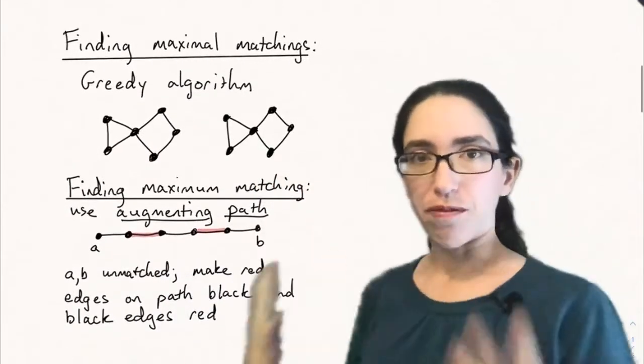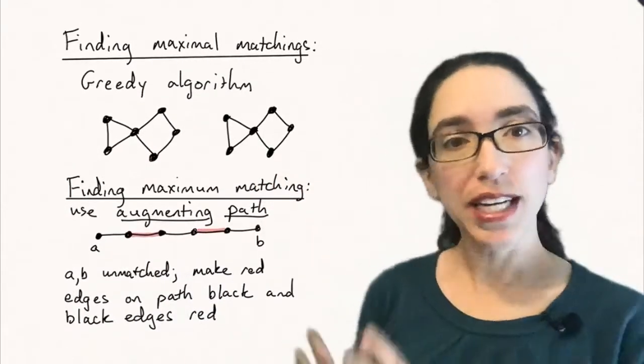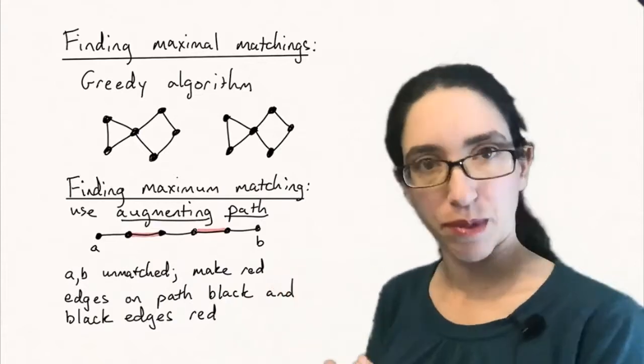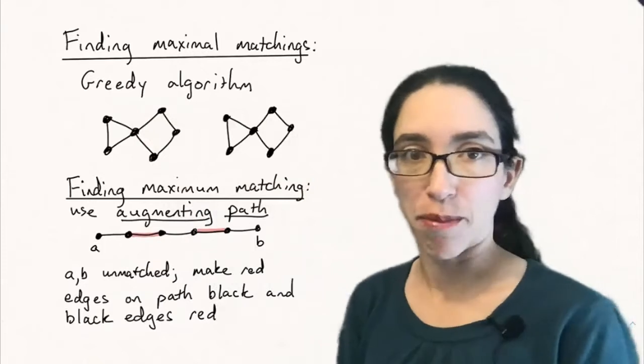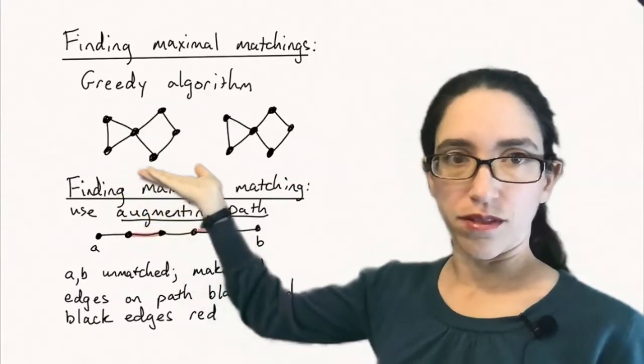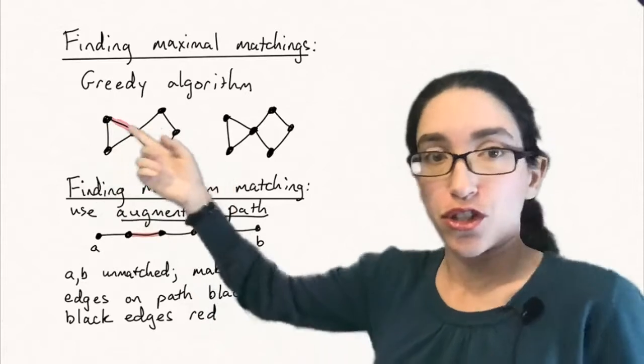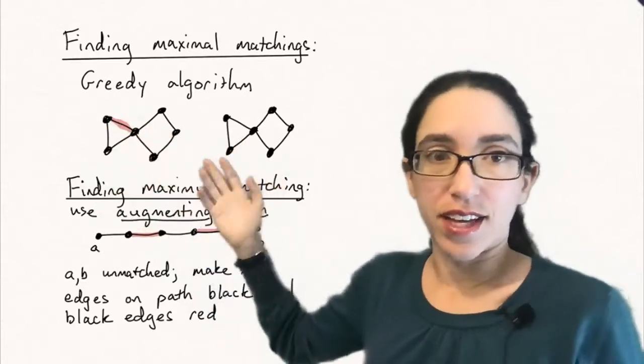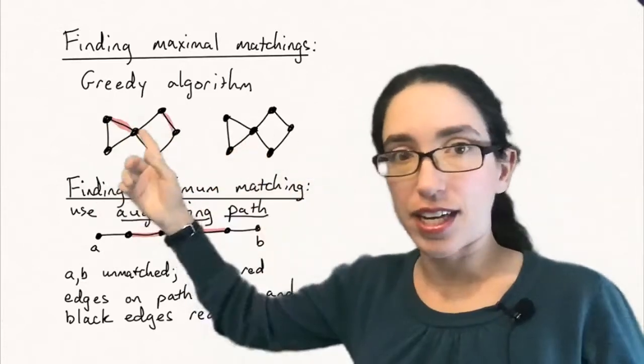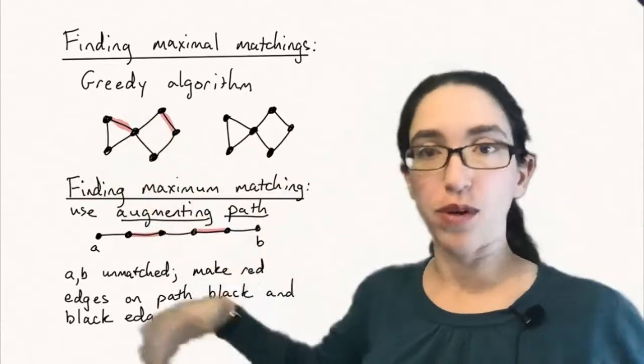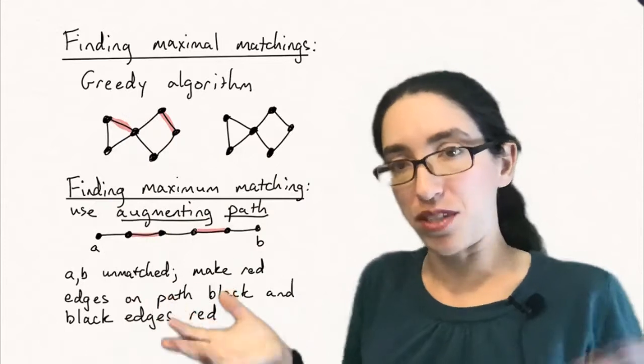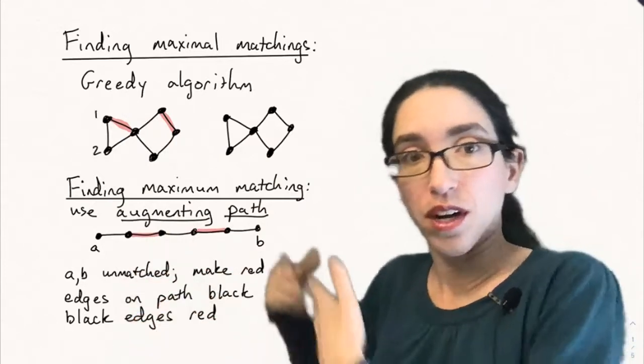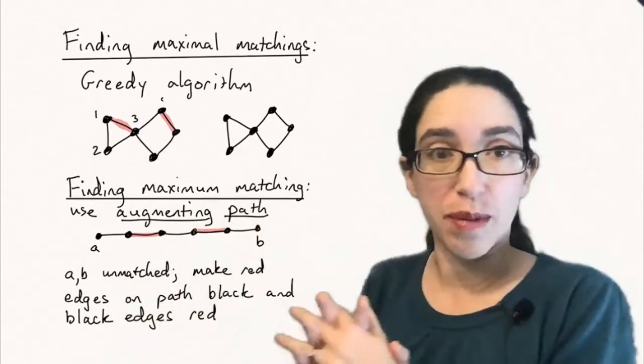So how do we find maximal matchings? Maximal is a little easier to find than maximum. You can just do the greedy algorithm for finding a maximal matching, starting with some graph. You can just choose any edge and then choose another edge that's not connected to that edge, like this edge, and keep going until you can't do that anymore. Then by the definition of maximal, since you can't add another edge anymore, what you end up with will be maximal.